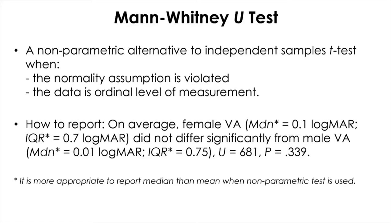For the independent samples t-test, all data should be at least interval level of measurement, because you need to calculate the mean. But if your data are ordinal — such as ratings from a survey — and you want to compare overall ratings between different independent groups, you can use the Mann-Whitney U-test, which is based on rank sums and designed for ordinal data. It also converts interval or ratio level data into ranked order.